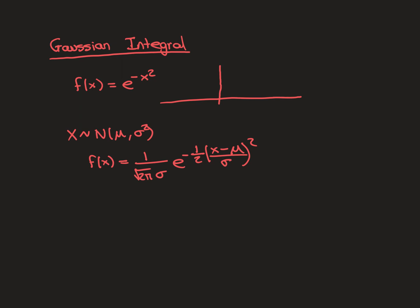The standard normal distribution is where you set mu equal to 0 but sigma squared equal to 1, giving 1 over the square root of 2π times e to the negative half x squared. So slightly different, but the Gaussian function is clearly very related to the normal distribution.